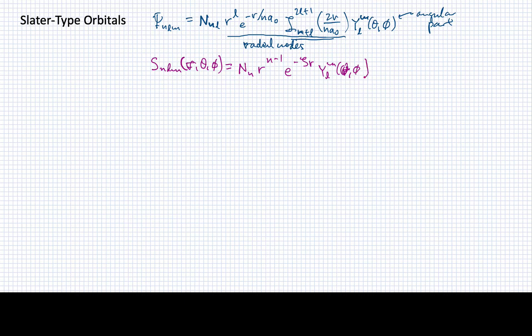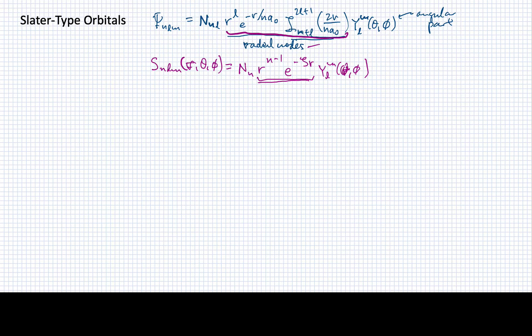A couple of things to notice: this Slater form has a lot more stuff than the original, and that's actually what makes it a little bit easier to use. But another critical point is that while we had radial nodes in the hydrogen radial part, we have no radial nodes in the Slater orbital. There is no way to get a node out of this particular combination of functions of r. So the Slater orbitals are distinguishable in this way, meaning they're not going to be precisely accurate for all purposes, but they've been tailored to be remarkably accurate.